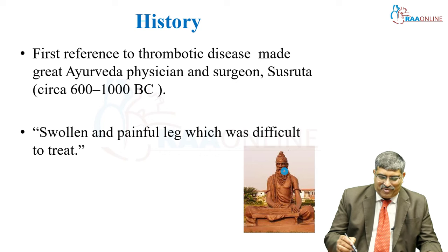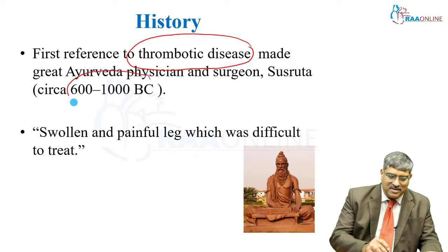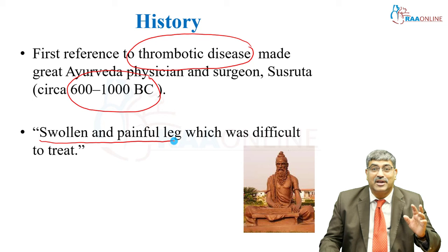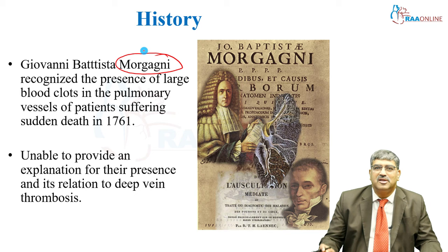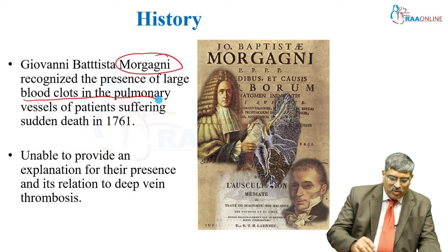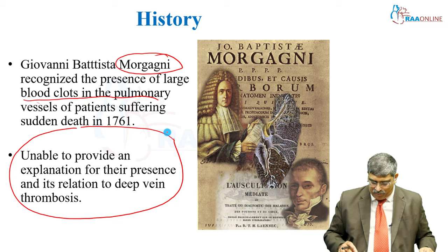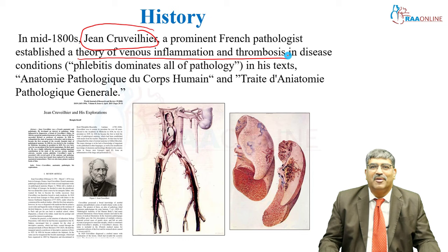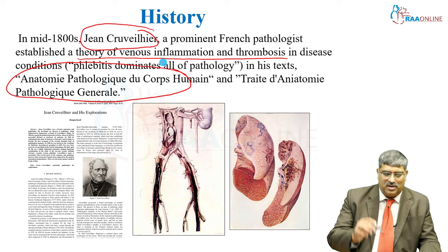Coming to the history, the first reference to thrombotic disease was made by Sushruta way back in 600 to 1000 BC in his book Sirka, where he mentioned DVT as a swelling and painful leg, very difficult to treat. In the 17th century, Morgagni — known for his Morgagni hernia — mentioned in his textbook blood clots in pulmonary vessels causing sudden death, but was unable to give an explanation for its relation to deep vein thrombosis. It was left to Jean Crueilhier in the 1800s, who developed a theory of venous inflammation and thrombosis and wrote about it.